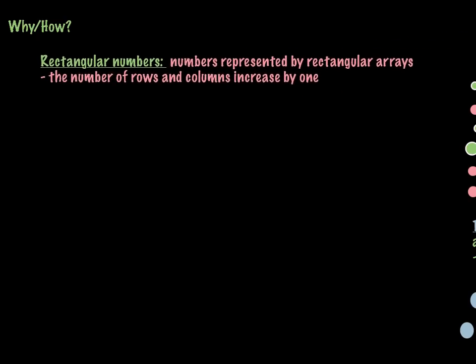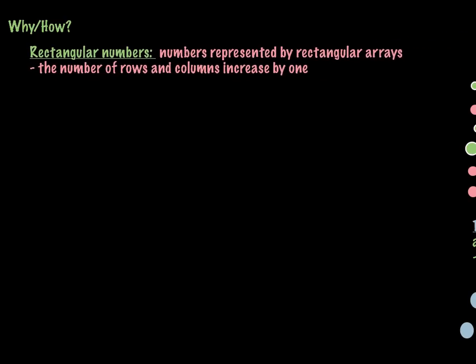We're first going to talk about a couple of vocabulary words because we need to understand what Mrs. Diem is talking about in class. We're going to talk about rectangular numbers. These are numbers represented by rectangular arrays, and the number of rows and columns increase by one.